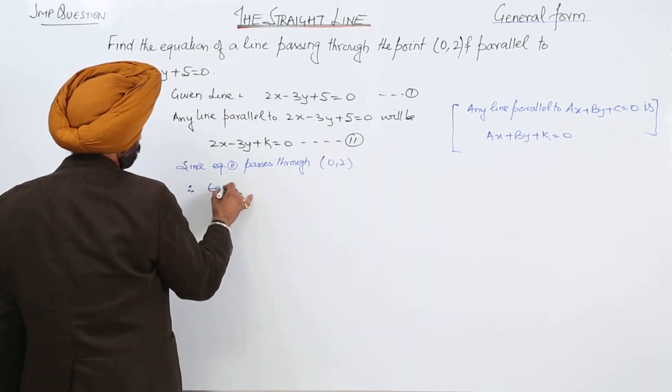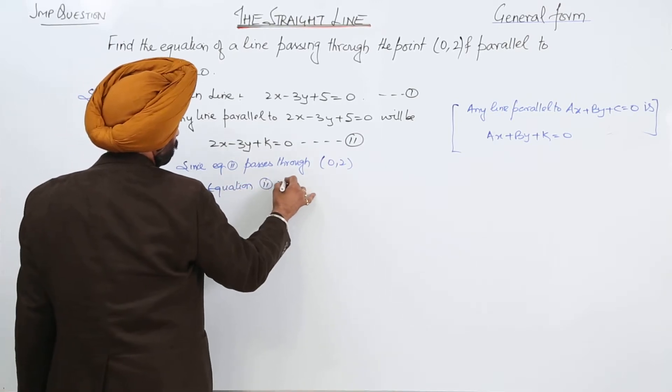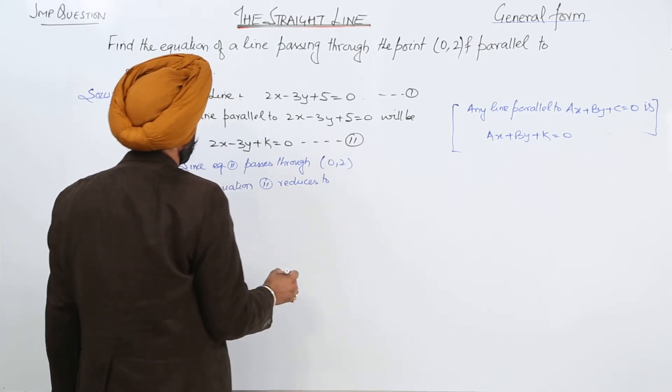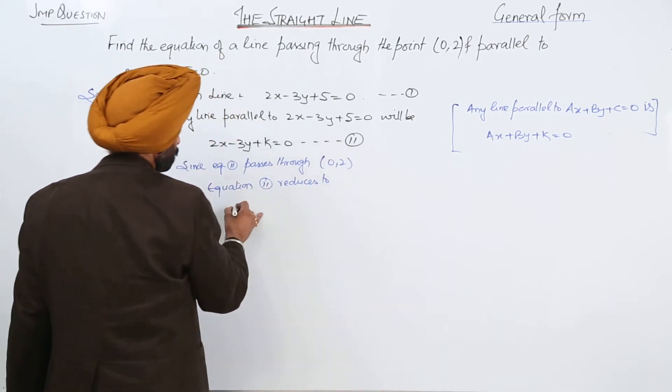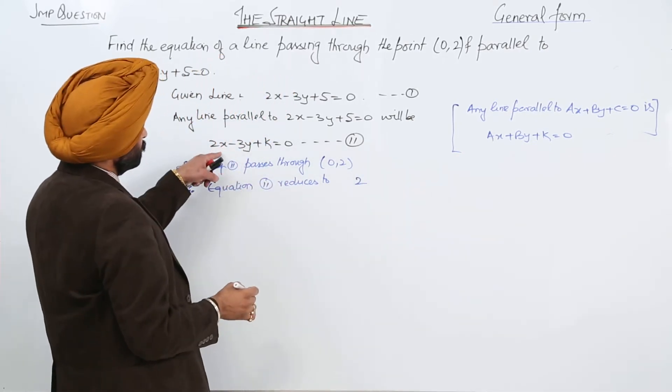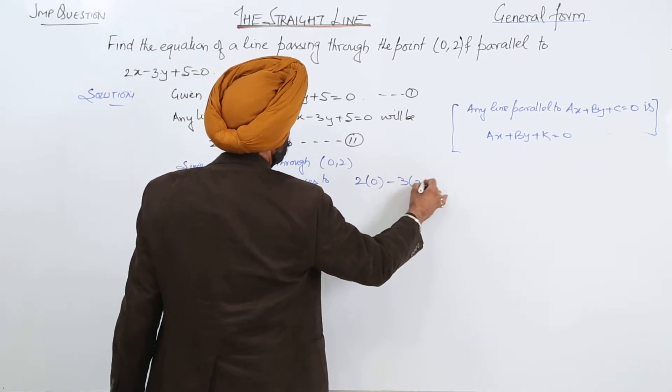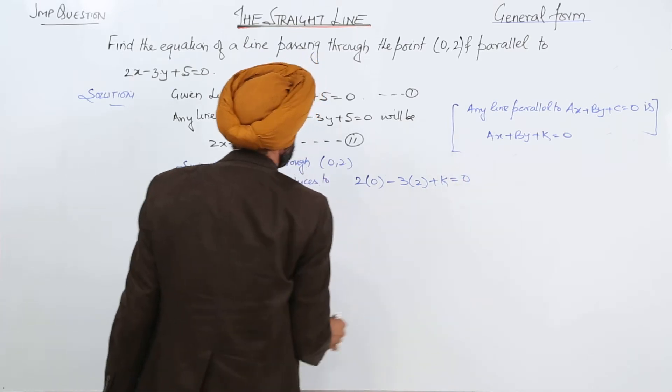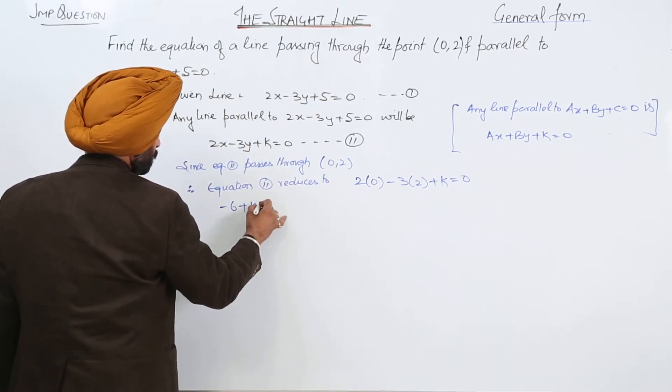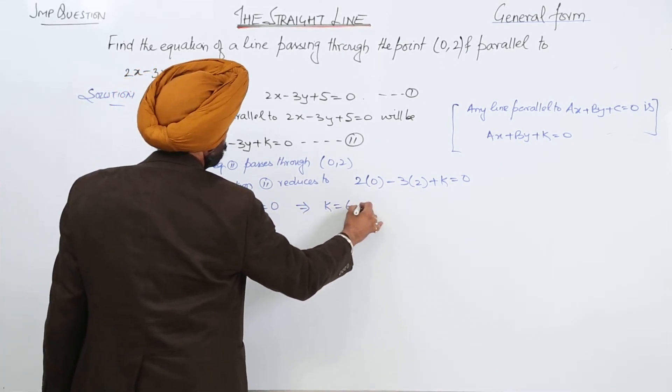Equation 2 reduces to 2(0) - 3(2) + k = 0, or -6 + k = 0, which gives k = 6.